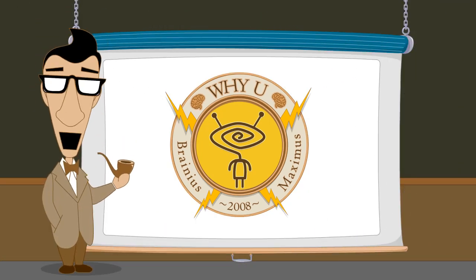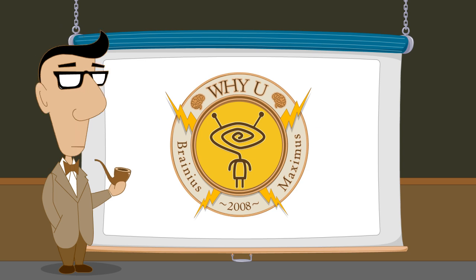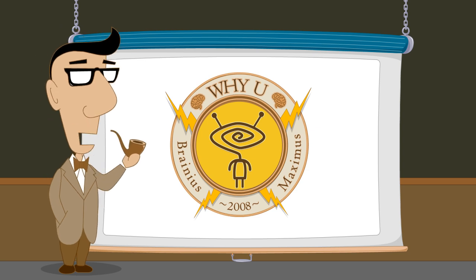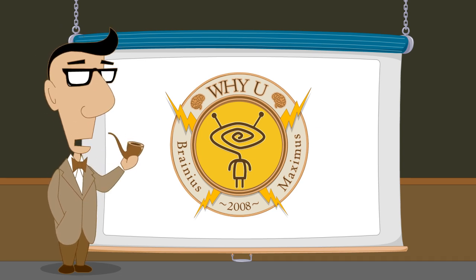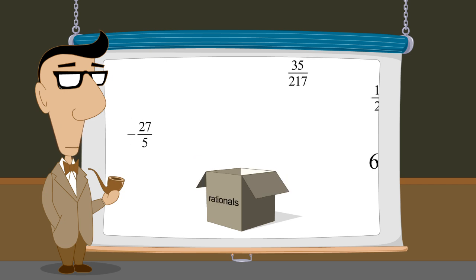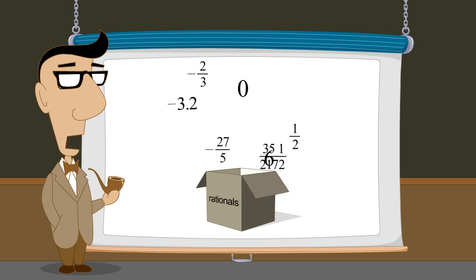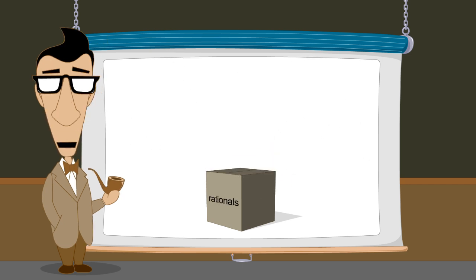Hello, I'm Professor Von Schmohawk and welcome to Why U. In the previous lecture, we saw that although the Greeks originally thought that all numbers were rational, they eventually discovered that there were quantities that could not be represented by rational numbers.